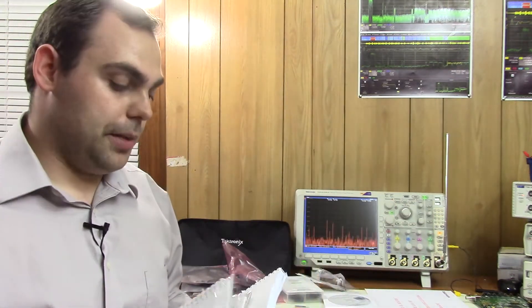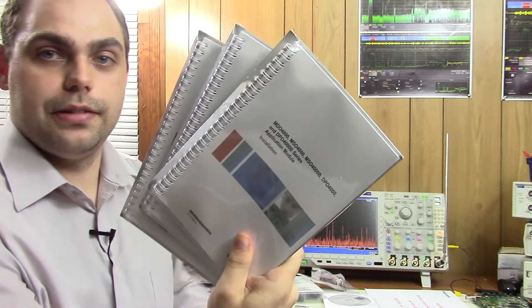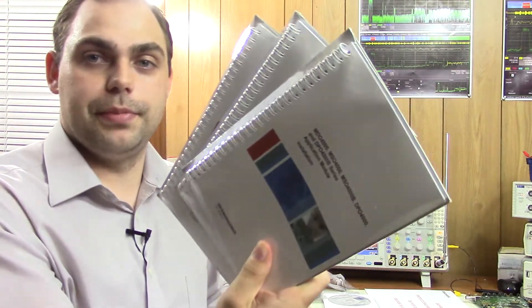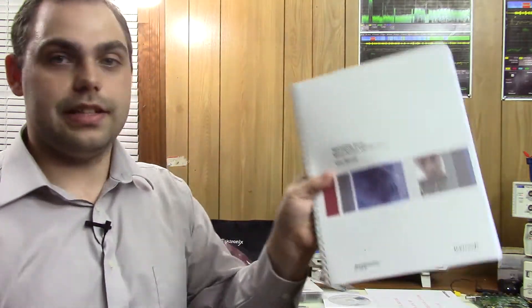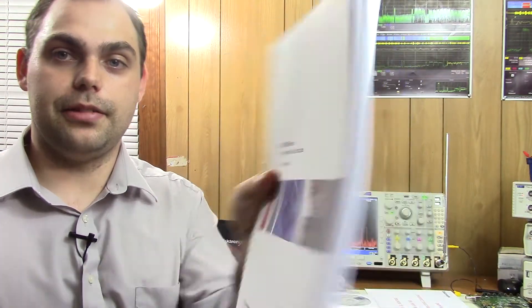I got three option modules. Each one of those comes with an actual printed instruction manual. How great is that? Same with the oscilloscope itself. Comes with this printed little manual here. Look at how thick it is. That's really nice.